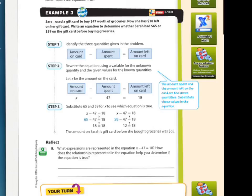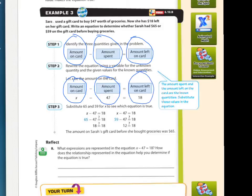Sarah used a gift card to buy $47 worth of groceries. Now she has $18 left on her gift card. Write an equation to determine whether Sarah had $65 or $59 on the gift card before buying groceries. So whatever your card is, that's what you start with. However much money is there. And then we're subtracting what she spent and that's going to equal how much is left. We don't know how much was on the card when we started but we know that she spent $47 and now she has $18 left.